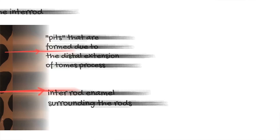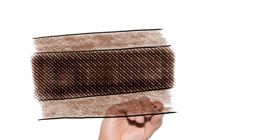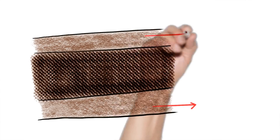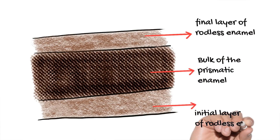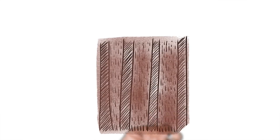As the ameloblast secretes the matrix, it retracts upwards towards the stratum intermedium side, making space for subsequent enamel matrix production. The distal Tomes' process gets sequentially thinned out as it is finally squeezed out of existence, leaving behind a thin narrow space that is filled by organic material — this is called the rod sheath. The structure of enamel in its rod and interrod pattern is entirely a product of the Tomes' process; without it, no such architecture could be established. This is why the first and final layers of enamel do not contain the rod and interrod pattern.